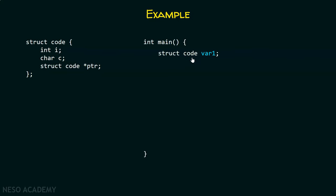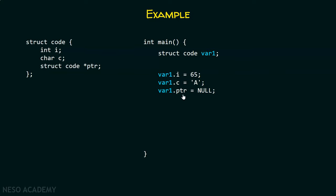In the main function, I have declared a struct code variable called var1 — a variable of type struct code. It can access all these members without any problem. var1 is accessing member i and initializing it with value 65. After that, it accesses member c and initializes it with character 'a'. Then it accesses the pointer ptr and initializes it with null. var1.ptr is a pointer to struct code itself, and initially it contains null.